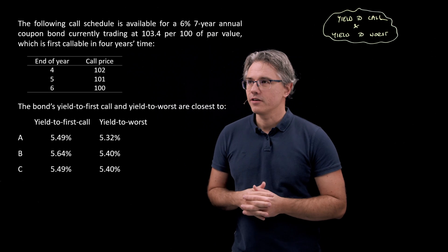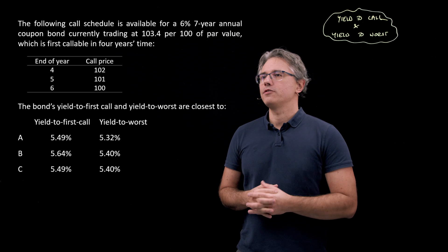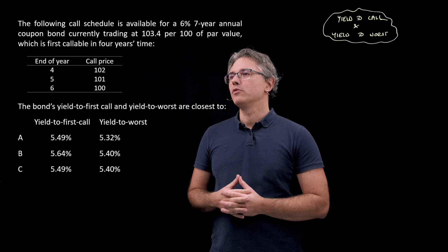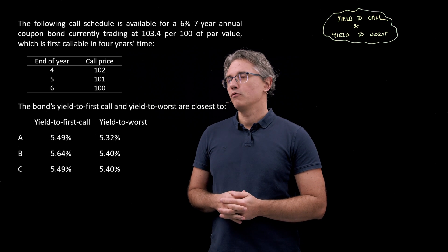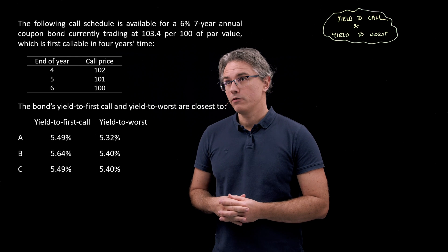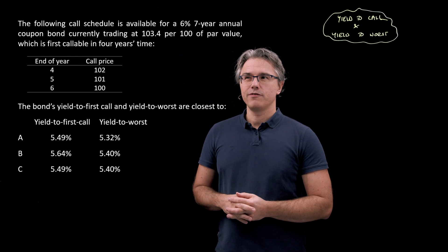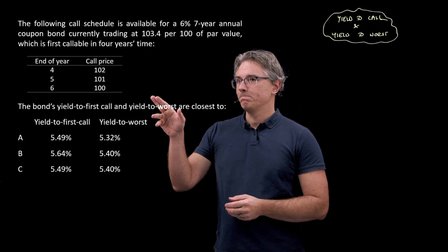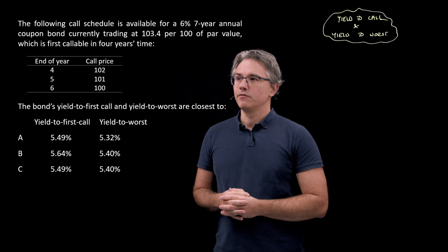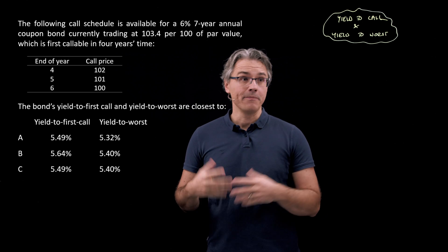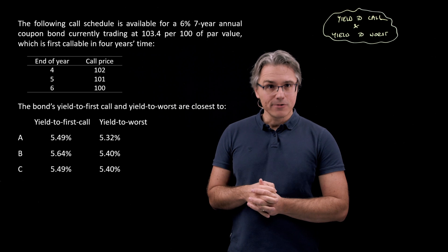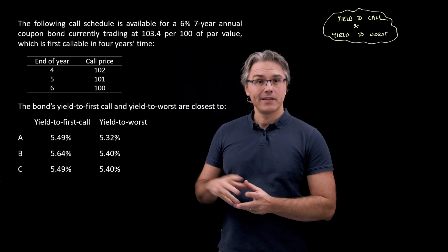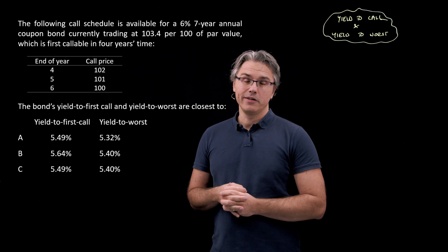So this is the question which I want us to have a go at. The following call schedule is available for a 6%, 7-year annual coupon bond currently trading at 103.4 per 100 of par value, which is first callable in four years time. We've got a schedule for the end of the fourth, fifth and sixth year—that's when the bond may be called. Obviously a callable bond is one which may be called, a bond that can be retired early by its issuer.